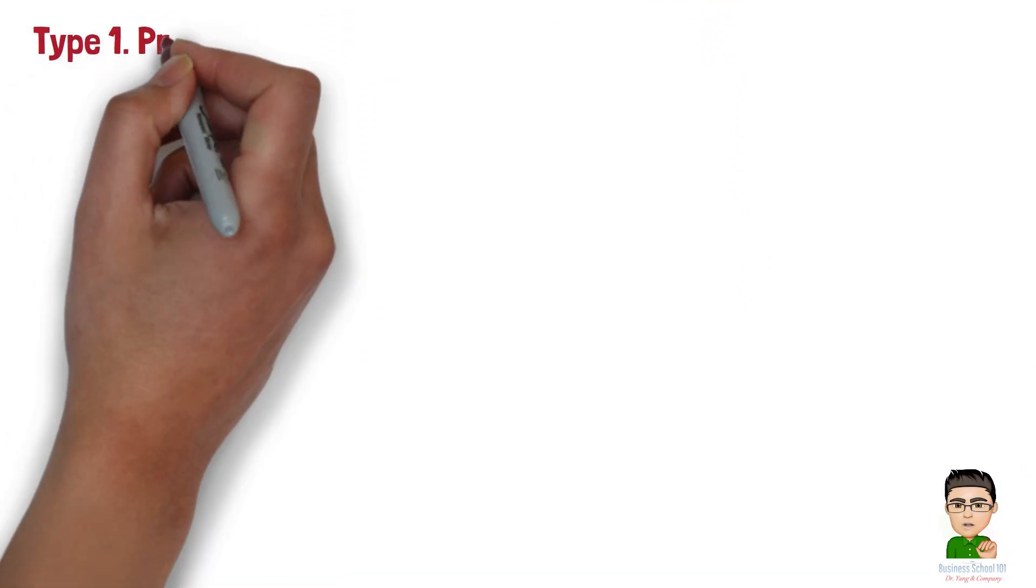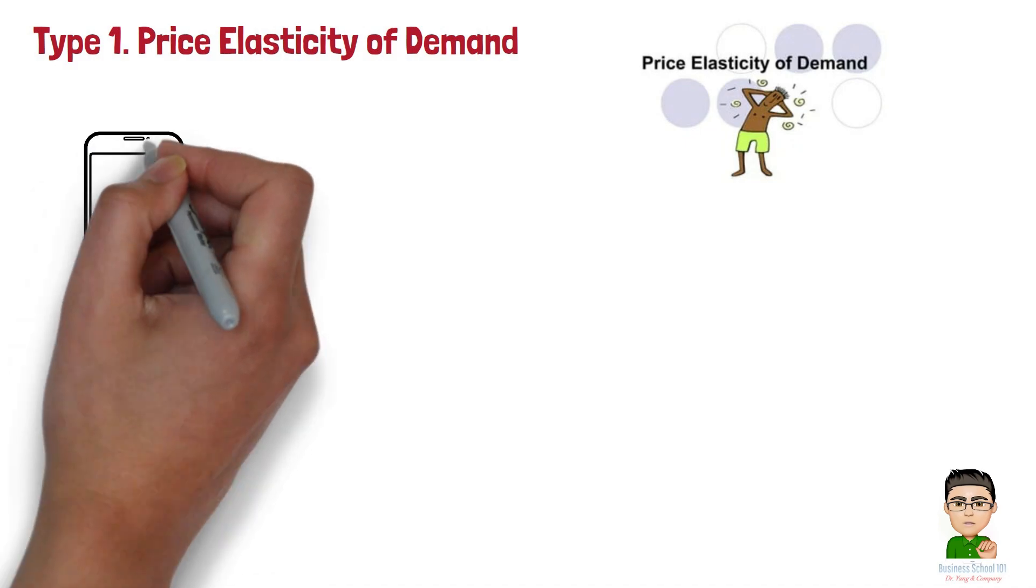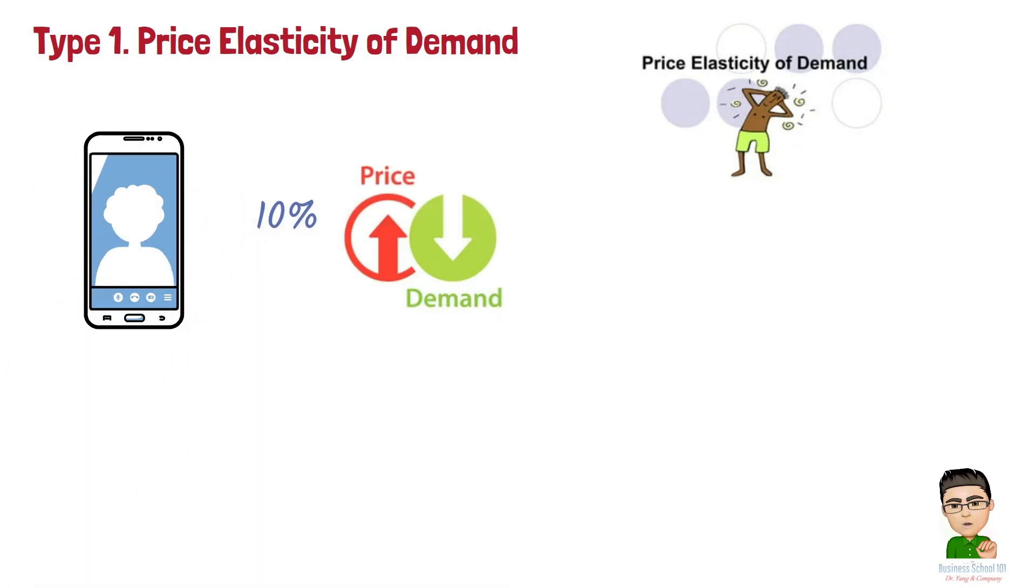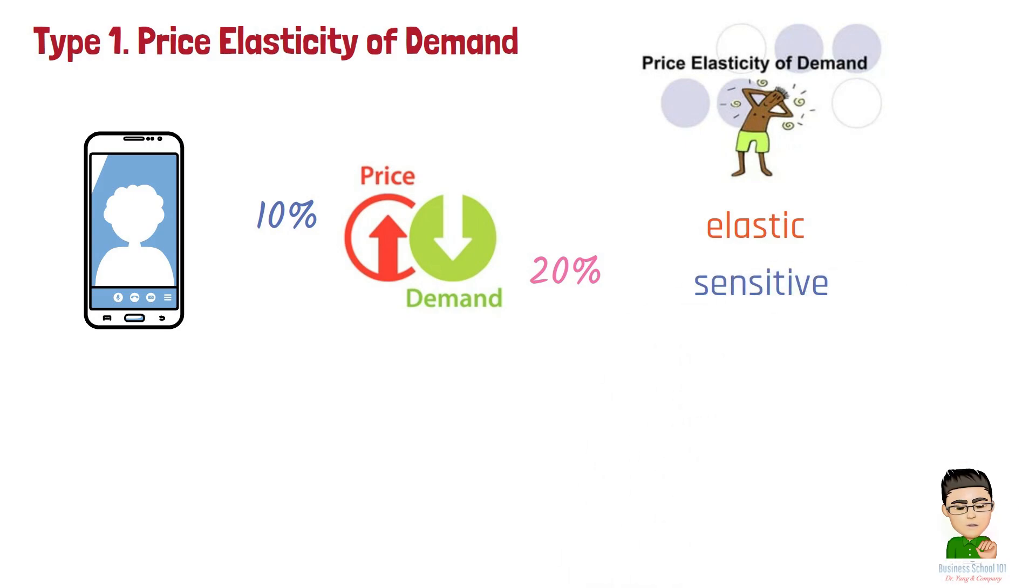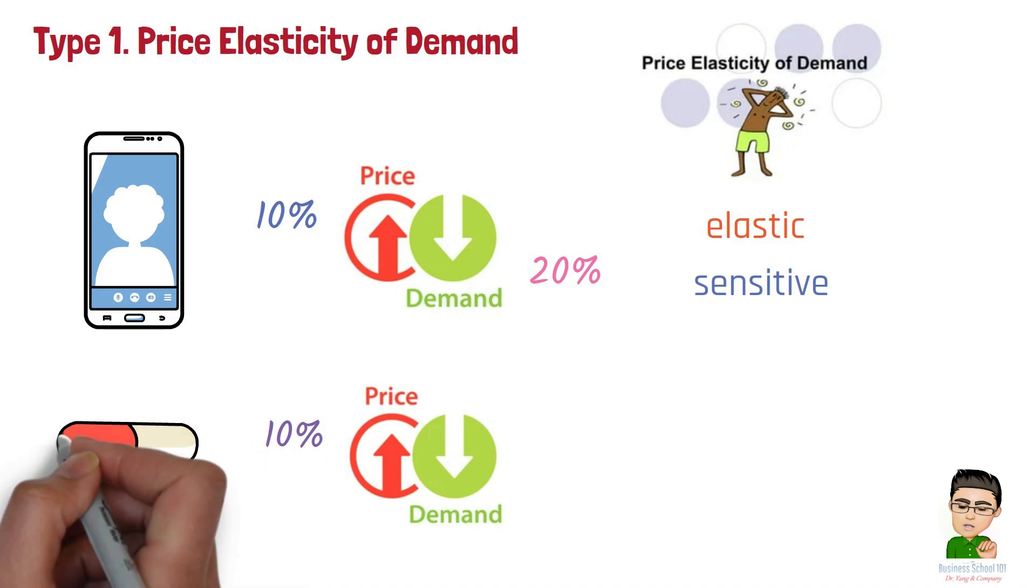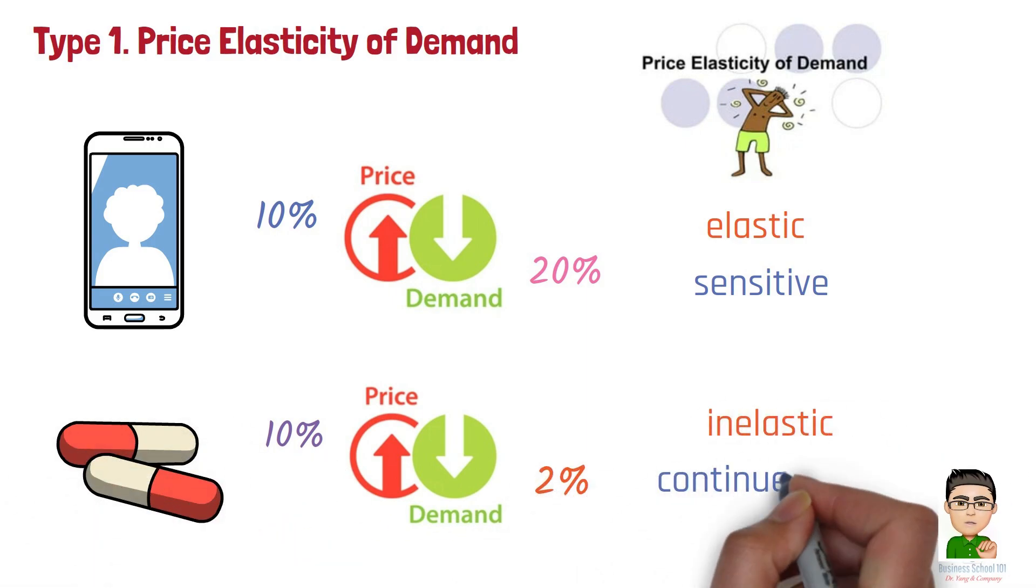Type 1: Price Elasticity of Demand. Price elasticity of demand measures how much the quantity demanded changes in response to a price change. It indicates whether consumers significantly alter their buying behavior when prices rise or fall. For example, if a smartphone's price increases by 10% and demand drops by 20%, demand is elastic, showing consumers are sensitive to price changes. Conversely, if a 10% price increase for a life-saving drug results in only a 2% drop in demand, demand is inelastic, meaning consumers continue buying despite higher prices due to its essential nature.